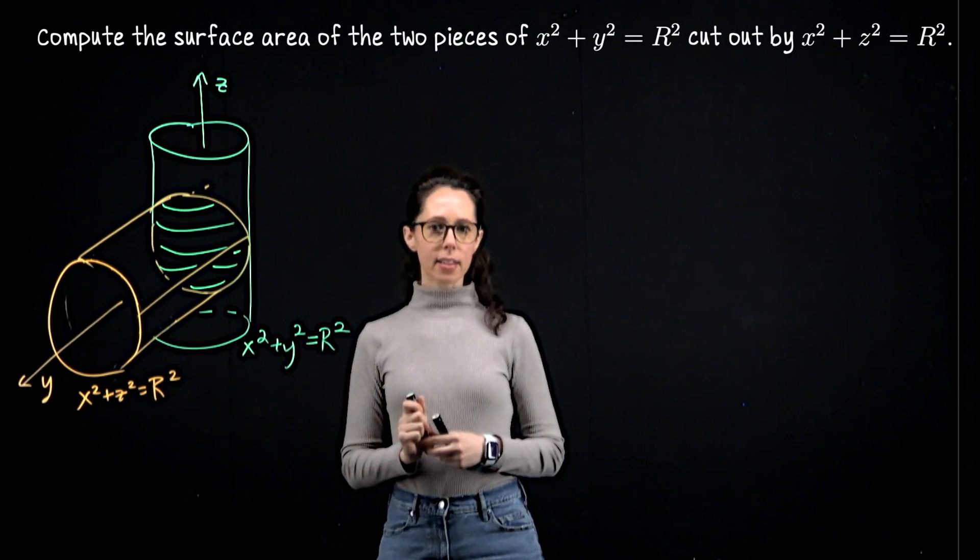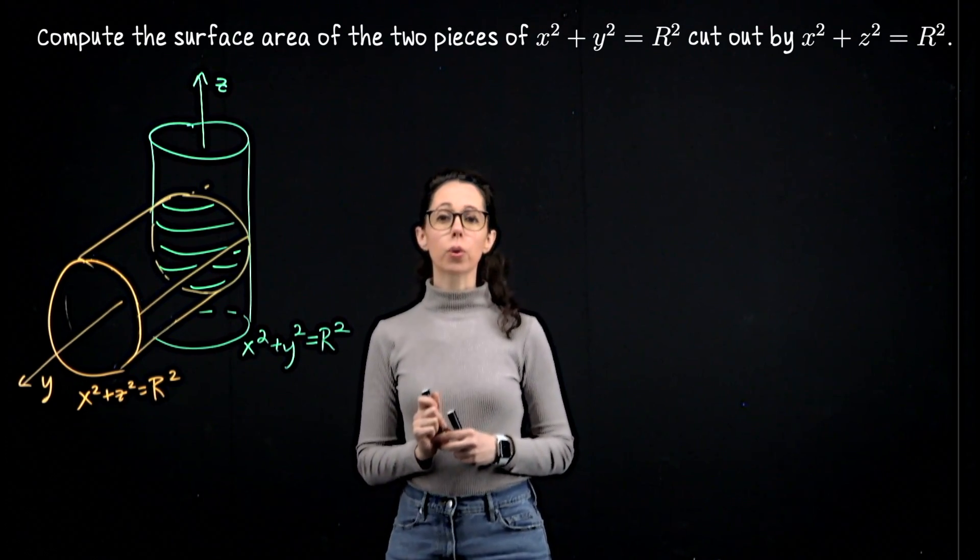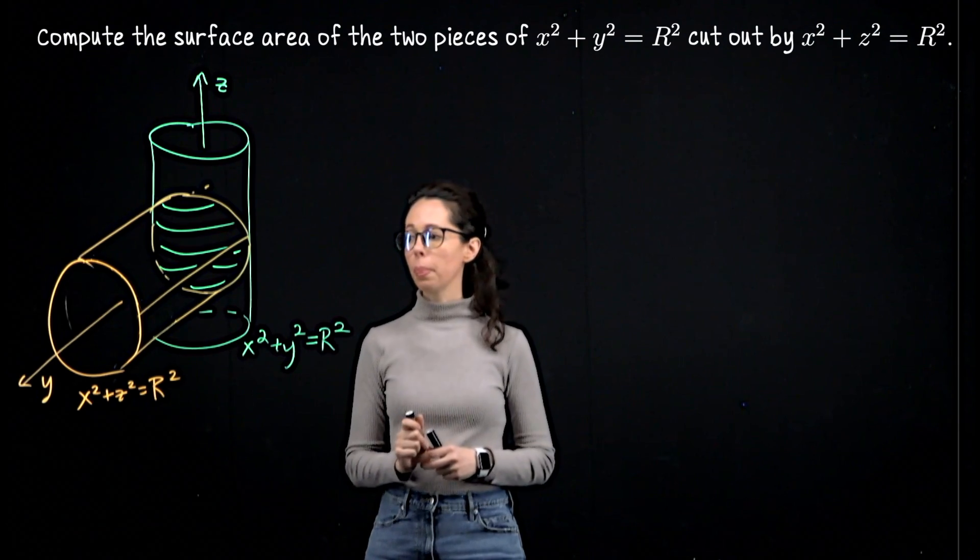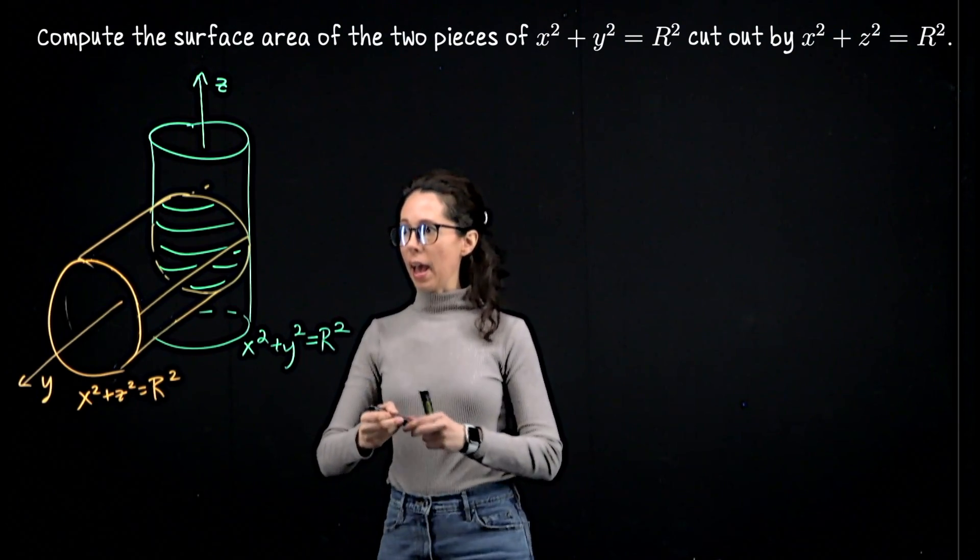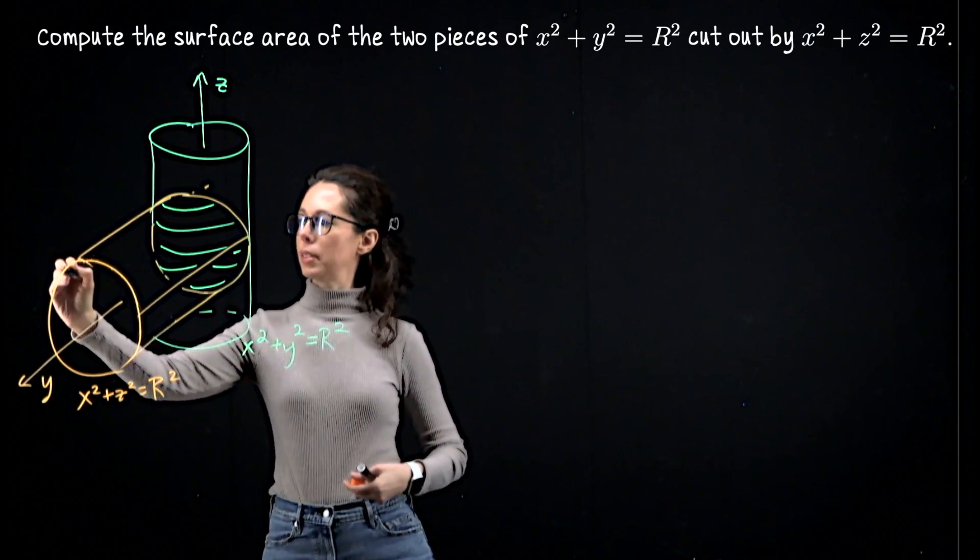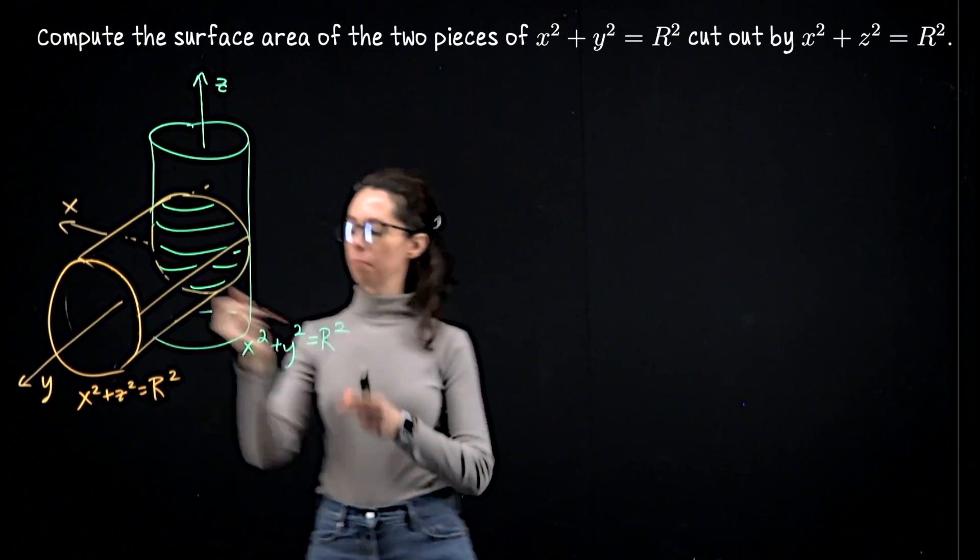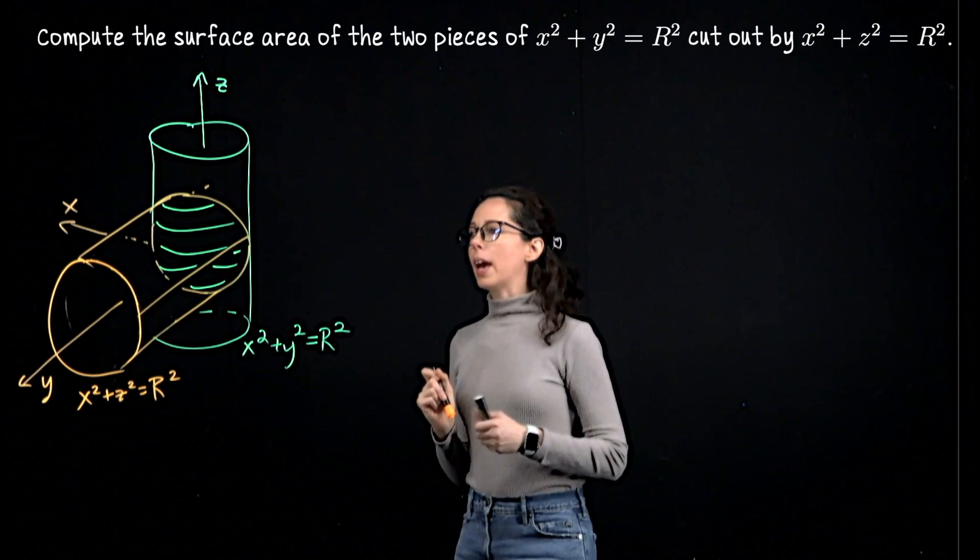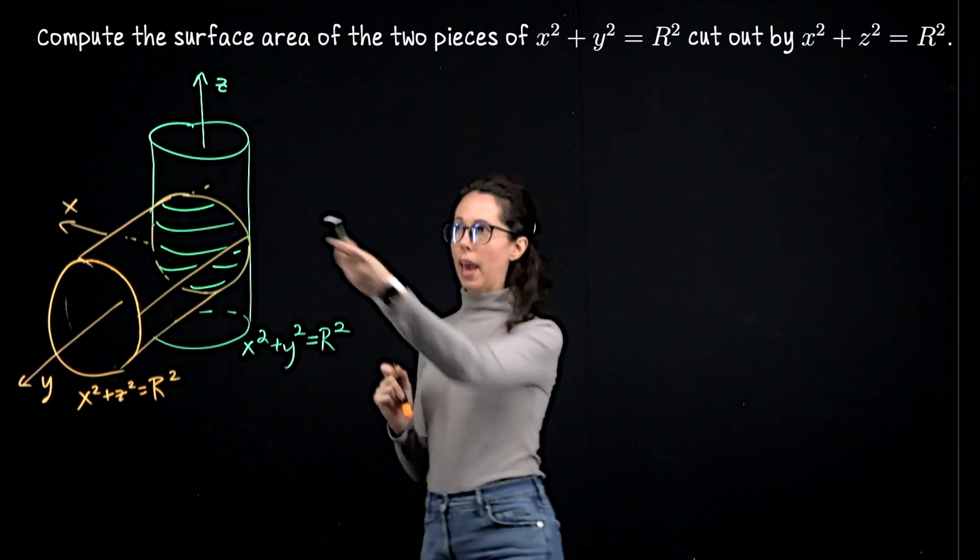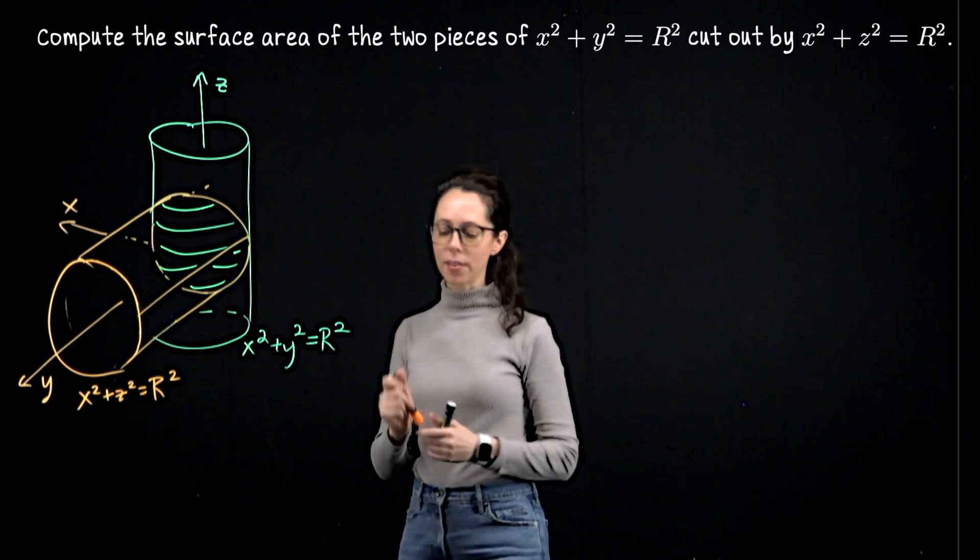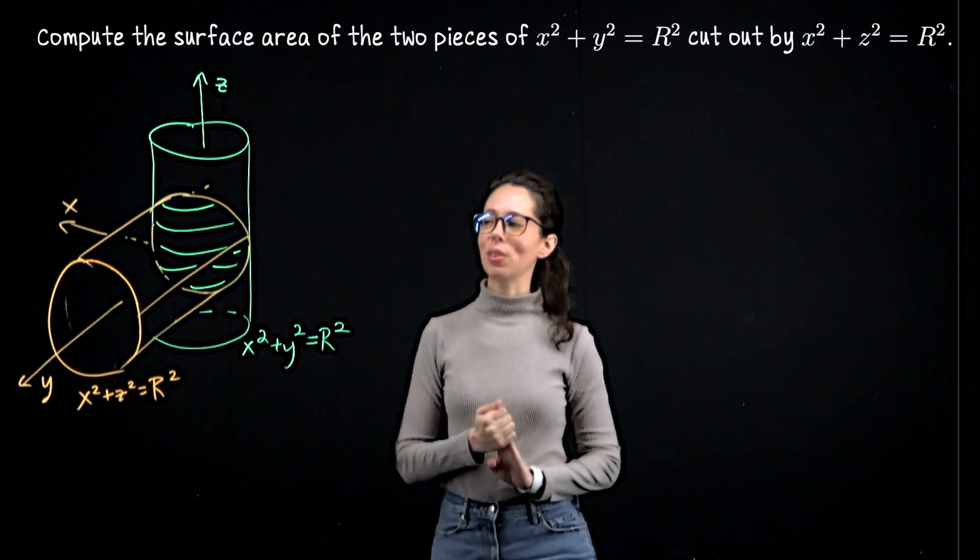Whenever you sketch your axes for three-dimensional space, you want to make sure that they satisfy the right-hand rule. So in particular, x would have to come, say, this way, sketch it kind of like that, so that i cross j is k. Okay. So this is the picture I've sketched to be appropriate with the right-hand rule.